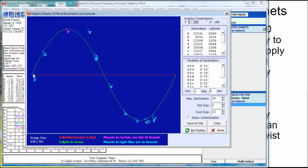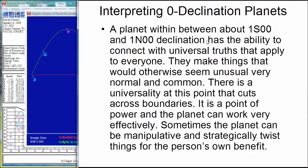So, if you have planets in Pisces, Aries, or Virgo, Libra, occasionally they'll be very, very close within a degree or two of the celestial equator, meaning that the declination is close to zero. And here's what I think it does. When a planet is between about one south and one north, probably a little bit bigger than that, but especially if they're within about a degree, it gives the ability to connect with universal truths that apply to everyone because you're on that universal note. You're at that symmetry point. You're right on that symmetry point.